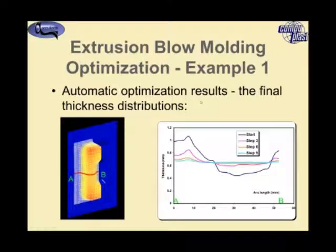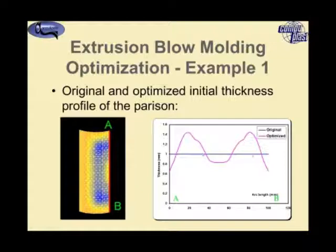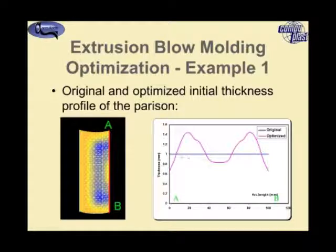Now let's look at what kind of parison we need to achieve this. Here is a thickness contour plot of the initial parison shape — again using quarter symmetry. Initially we started with an even parison, but to get the optimal shape in our product we need a variation — essentially an M-pattern in the extruded parison. That M-pattern really only needs to occur in that specific position.